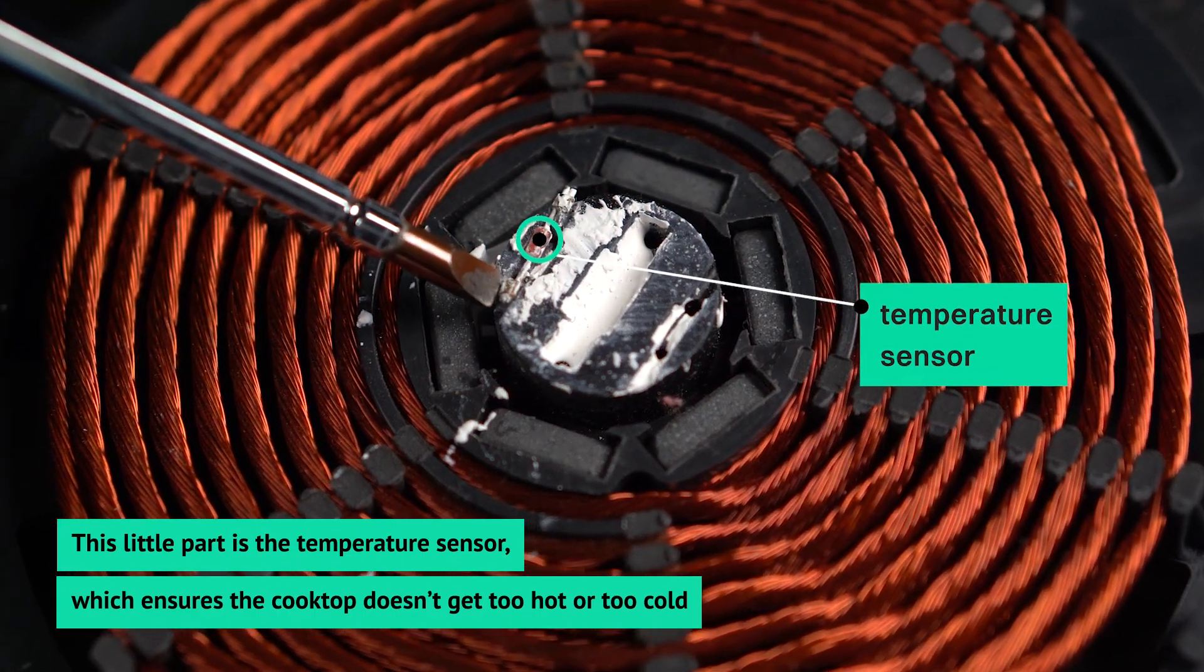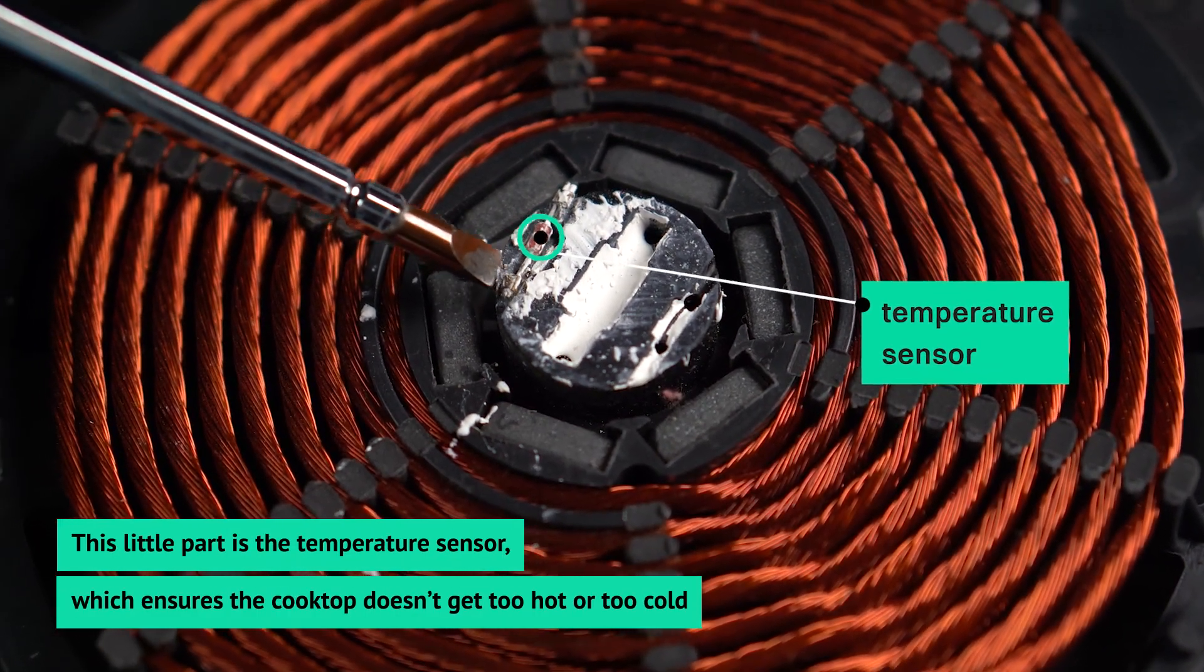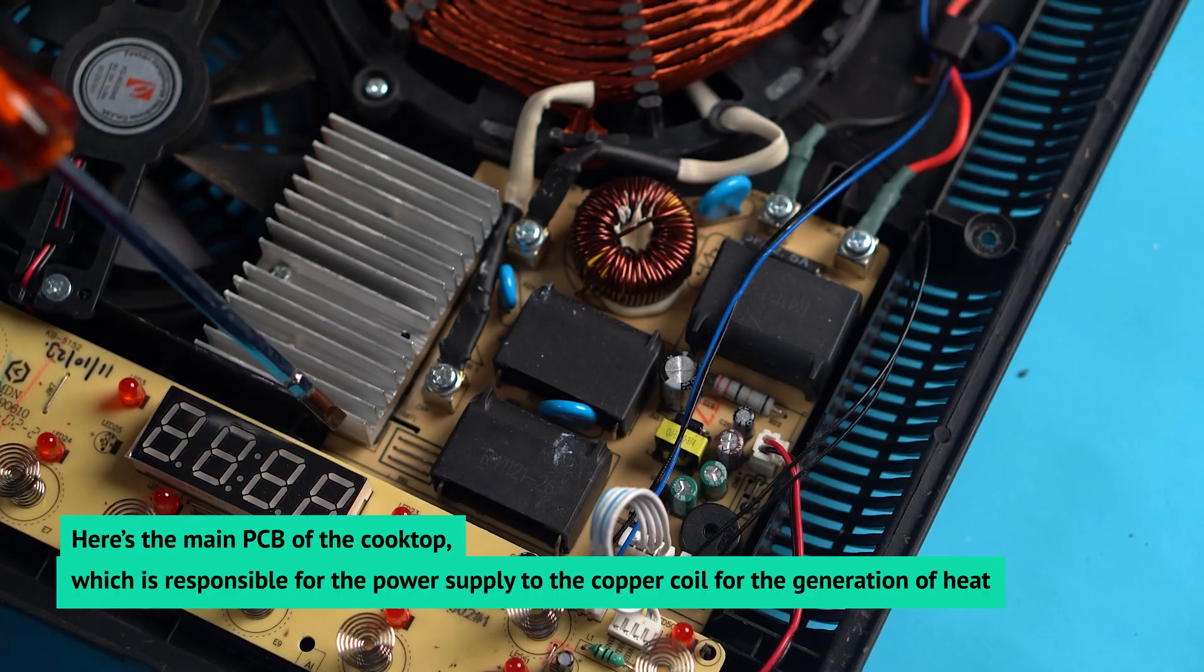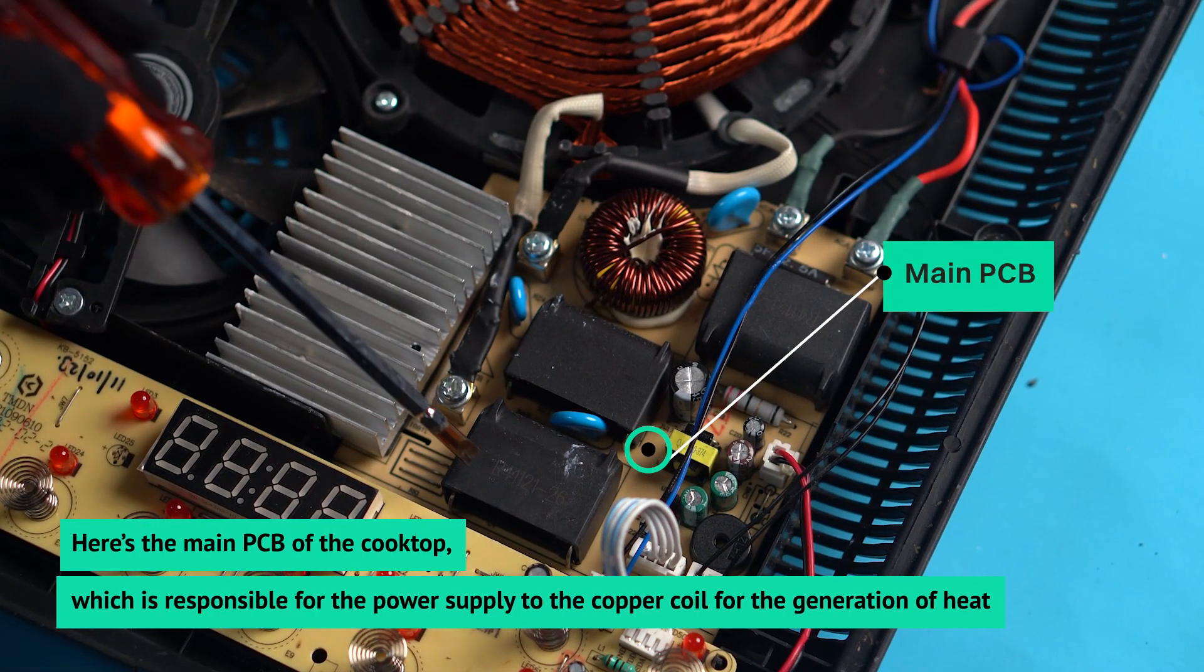This little part is the temperature sensor, which ensures the cooktop doesn't get too hot or too cold. Here's the main PCB of the cooktop, which is responsible for the power supply to the copper coil for the generation of heat.